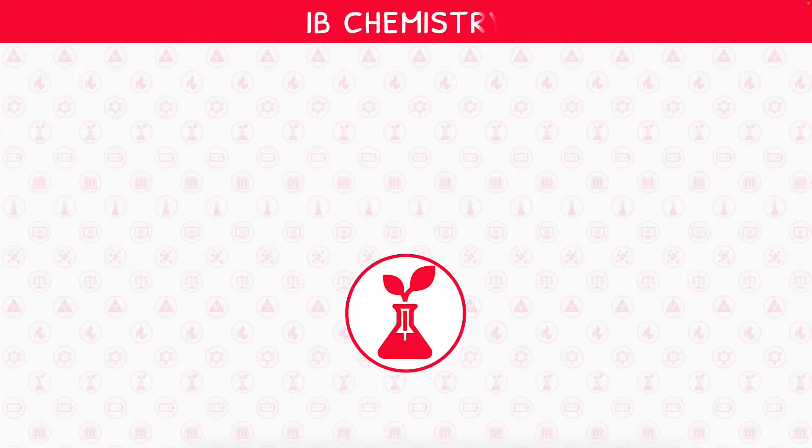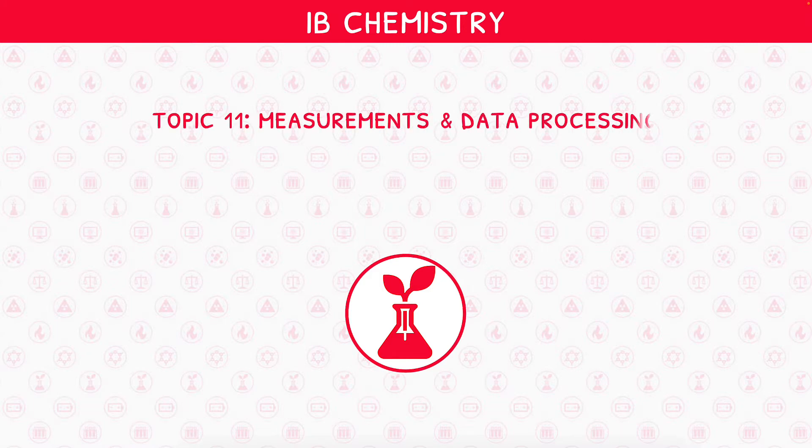Welcome back to our IB Chemistry video series. This is the second video in IB Chemistry Topic 11, Measurements and Data Processing, where we will be looking at the Index of Hydrogen Deficiency and Mass Spectrometry.